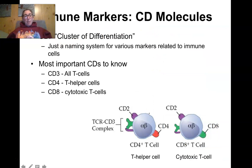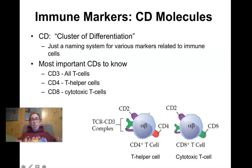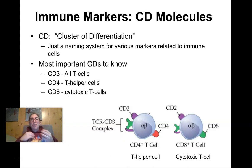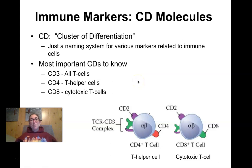Another important category of markers are the CD molecules — cluster of differentiation. It's a naming system used in the field of immunology to identify different immune cells. There are many different CD markers. The three important ones to know are CD3, CD4, and CD8. Any cell that has a CD3 marker is a T cell — all types of T cells have CD3. CD4 means it's a T helper cell, and CD8 means it's a cytotoxic T cell.